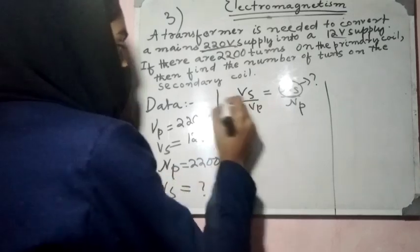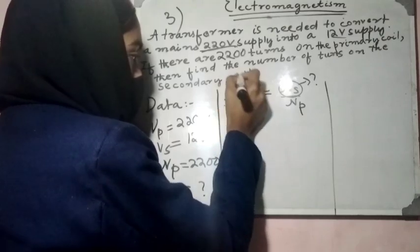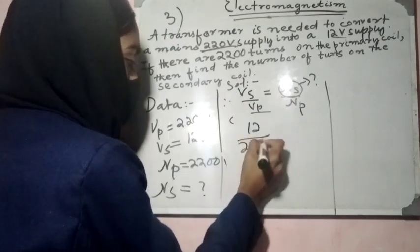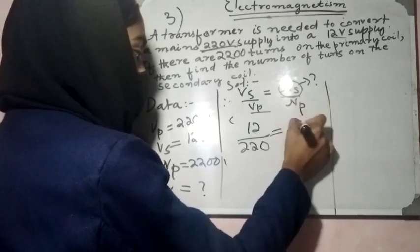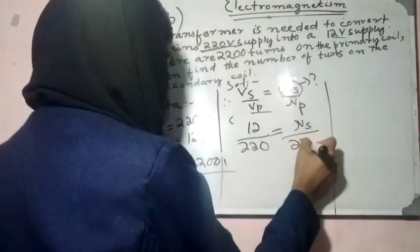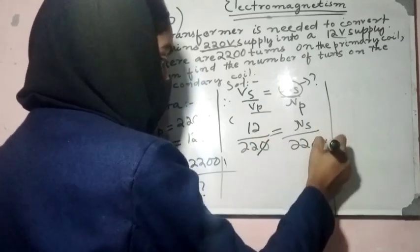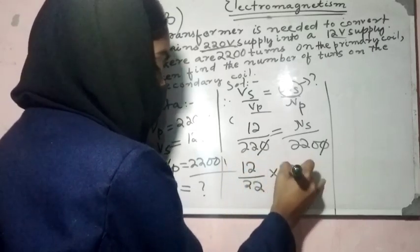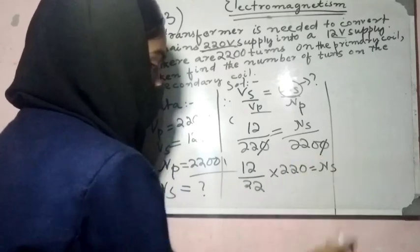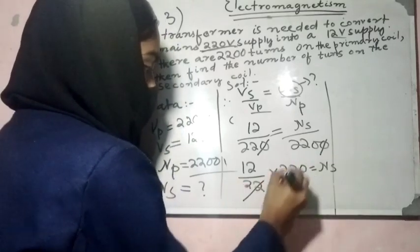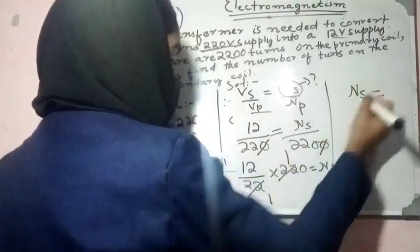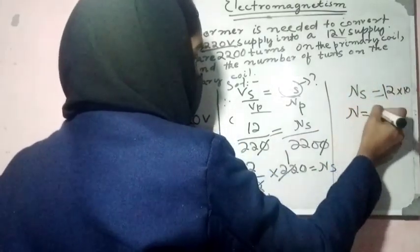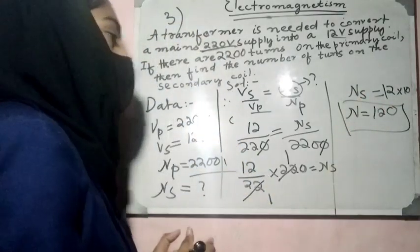The solution formula is V_S over V_P equals N_S over N_P. So 12 over 220 equals N_S over 220. This gives us N_S equals 12 times 220 divided by 220, which equals 12. So this is the answer.